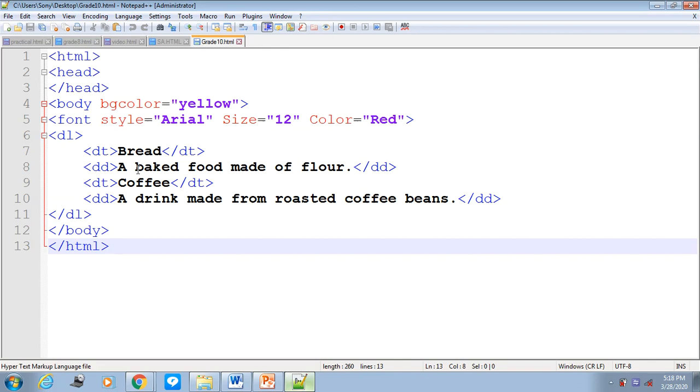Now, what is DT here? The word 'bread' is a term. In order to define the meaning of bread, we use a DD tag. So the DD tag is a description about the term DT.